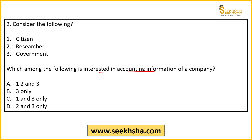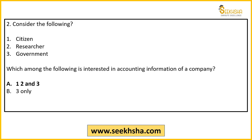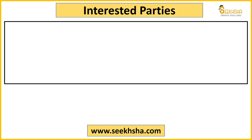Options हैं: A) 1, 2, 3; B) 3 only; C) 1 and 3; D) 2 and 3। सरकार तो बच्चे easily predict कर लेते हैं कि accounting information में interested होगी — tax के point of view से। Problem आती है citizen और researcher में — क्या यह दोनों accounting information में interested हैं? Correct answer होगा option A — 1, 2, and 3 — तीनों party interested हैं।